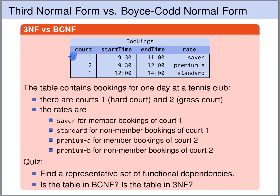For instance, they also imply that rate and start time together form a key, uniquely determining court and end time. So is this table in Boyce-Codd normal form? No, it is not. Looking at the functional dependency that rate uniquely determines court: the left-hand side, rate, is not a key of this relation, and this functional dependency is not trivial — court is not a subset of rate. So this table is not in Boyce-Codd normal form. However, is it in third normal form?